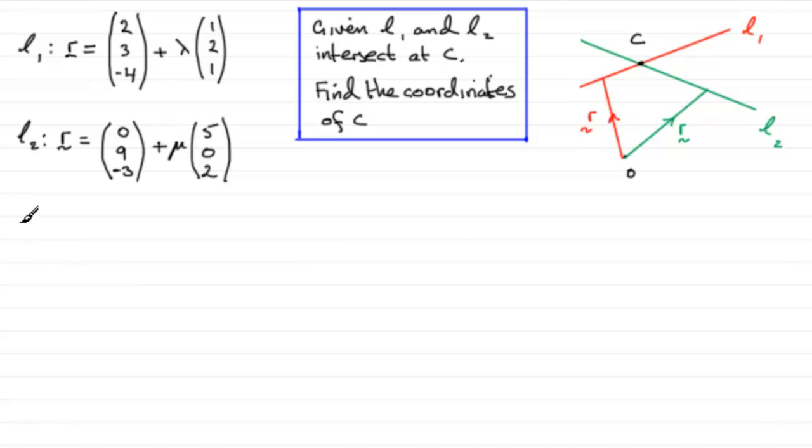So that is our starting point. We can say that at the point of intersection, we've essentially got that each vector equals one another.